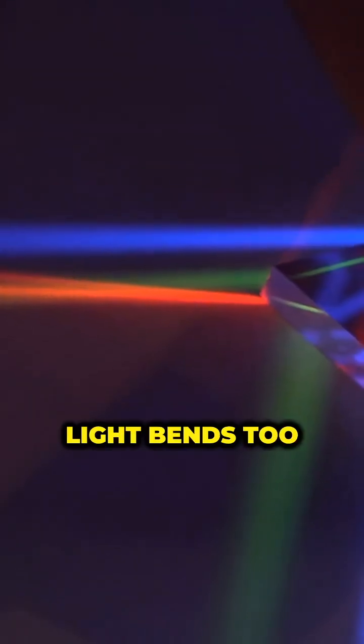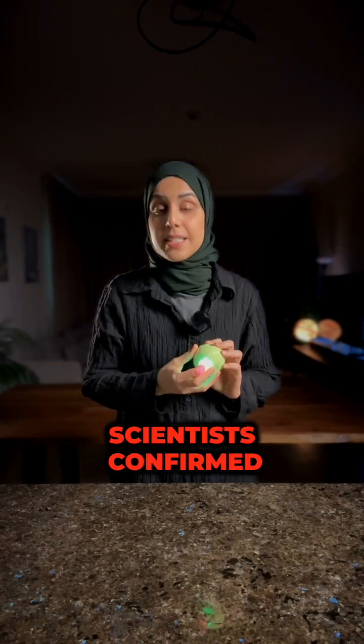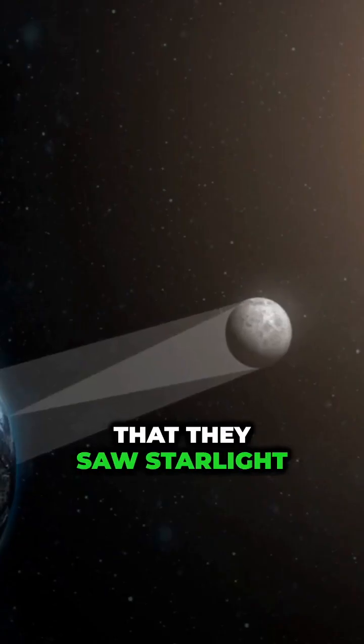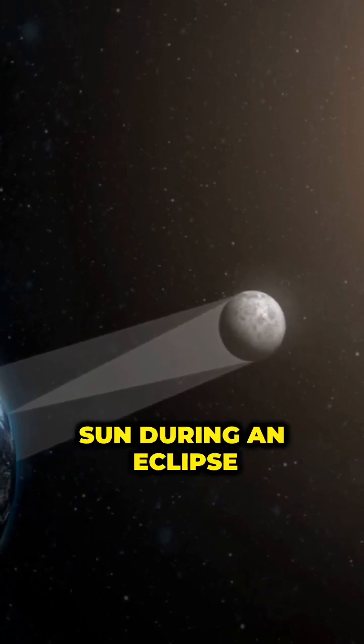And guess what? Light bends too. In 1919, scientists confirmed Einstein's prediction that they saw starlight bending around the sun during an eclipse.